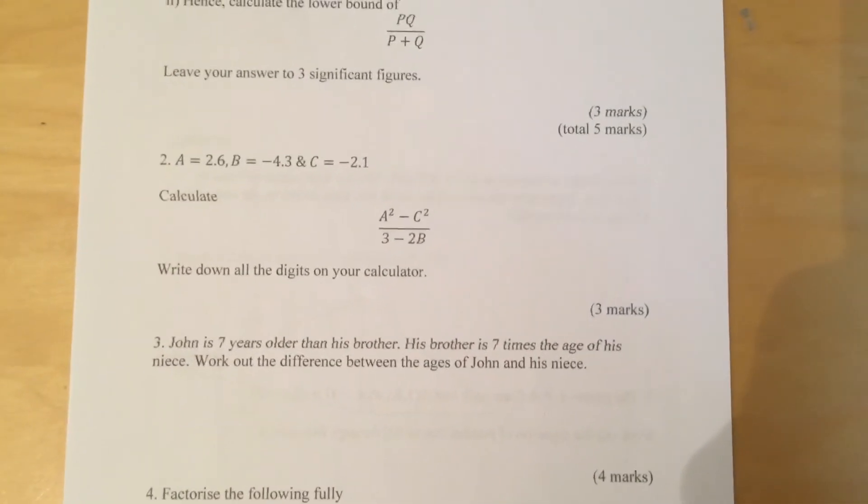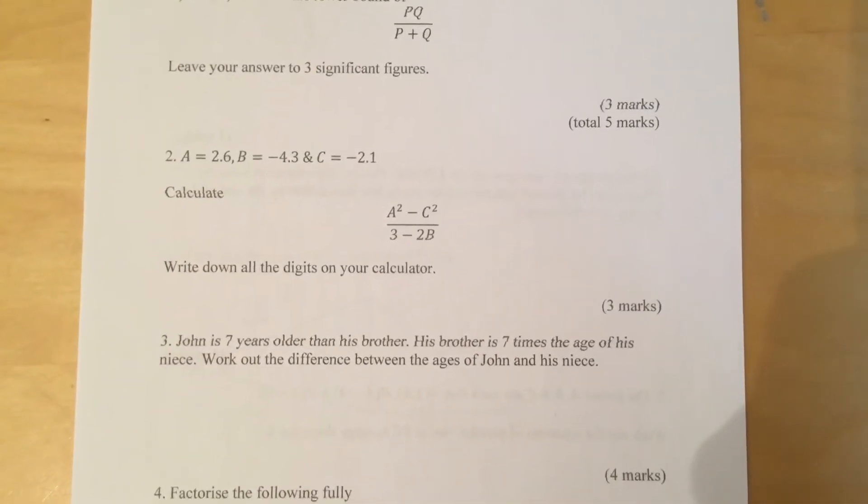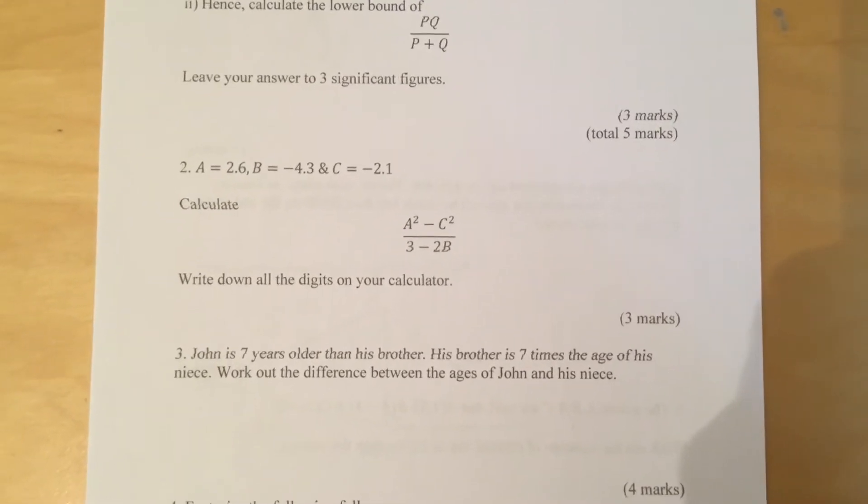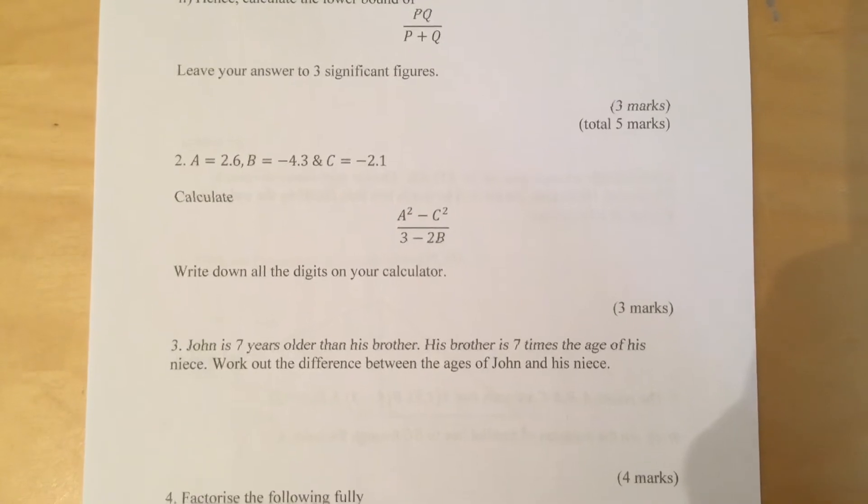Question 3. John is seven years older than his brother. His brother is seven times the age of his niece. Work out the difference between the ages of John and his niece.